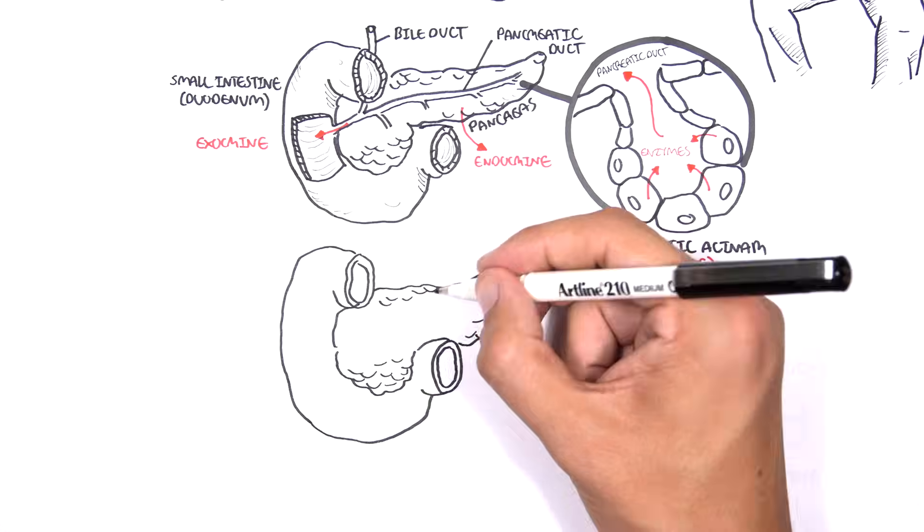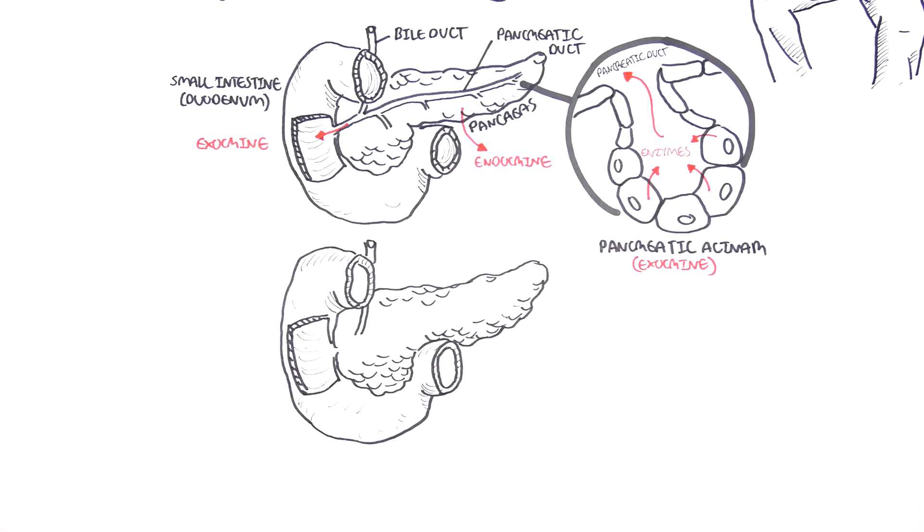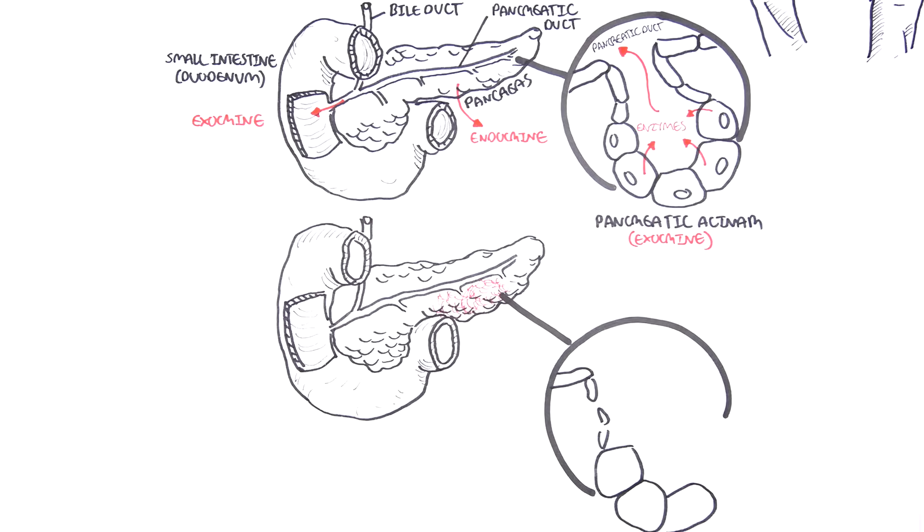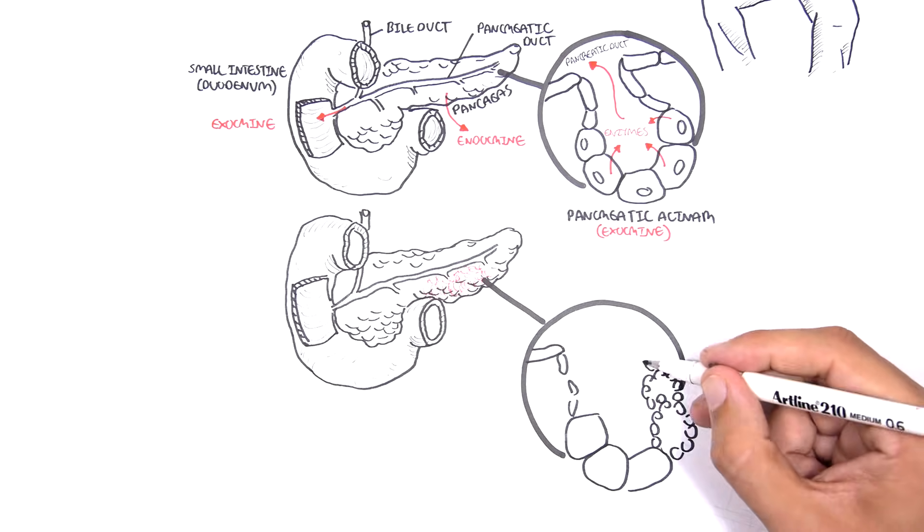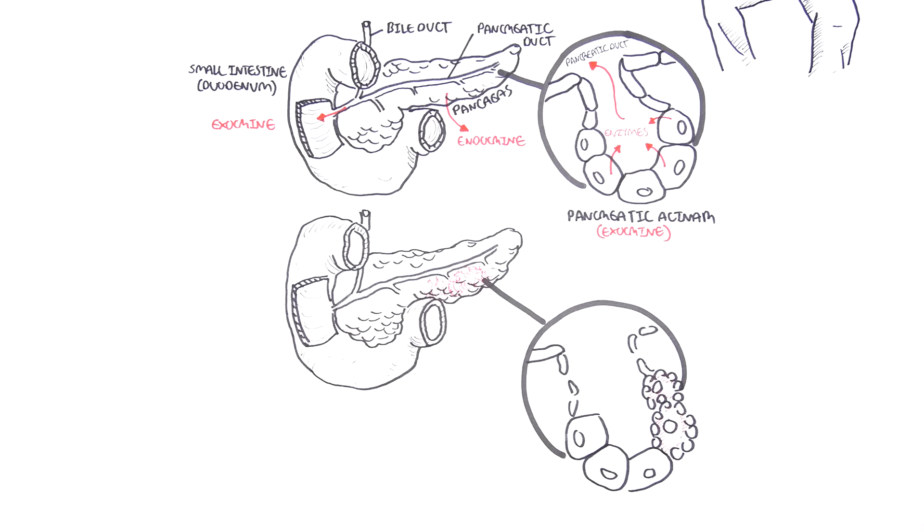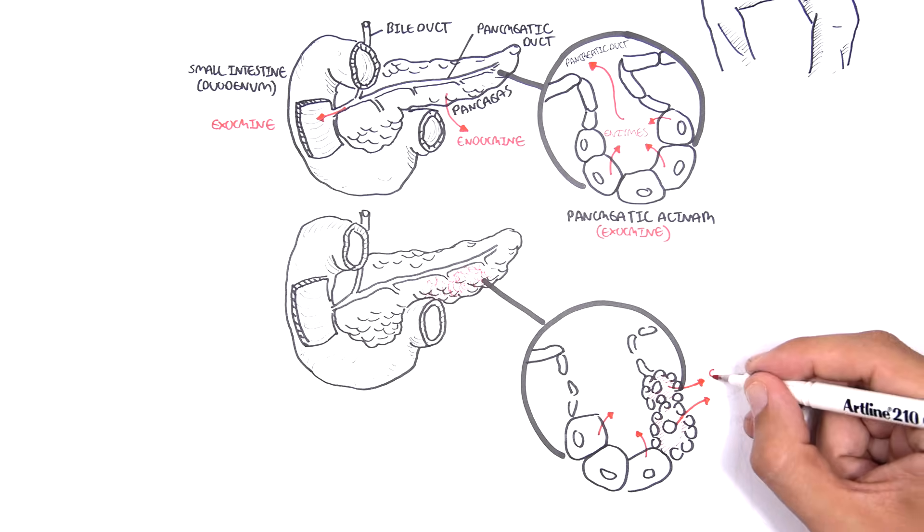In acute pancreatitis, there is inflammation of part of the pancreas due to a number of causes. Because of the inflammation, the pancreas becomes damaged. The acina get damaged and release its digestive enzymes around them, resulting in further damage of surrounding structures.